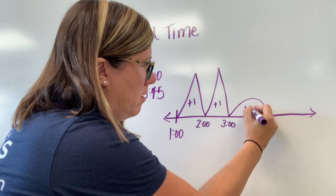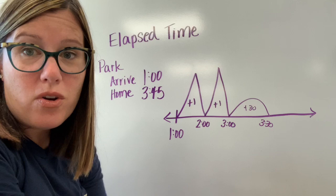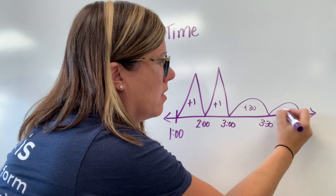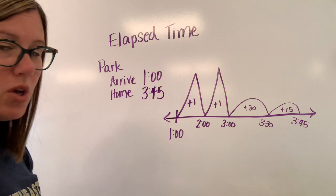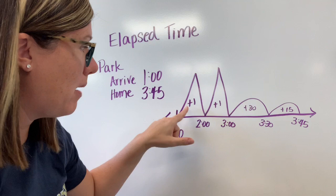What I'm going to do is add a 30 minute hill and that gets me to three thirty. Then I can do another small hill and get to three forty five. A 15 minute hill would get me to three forty five. So in order to find out how long I went swimming I'm going to add up the times inside these mountains and these hills.